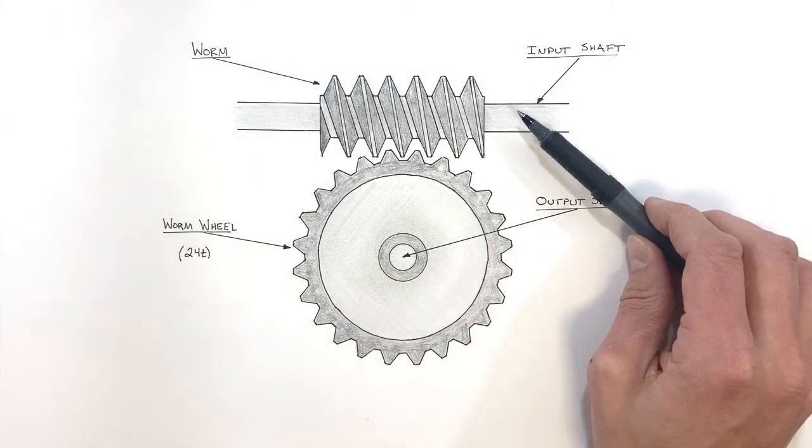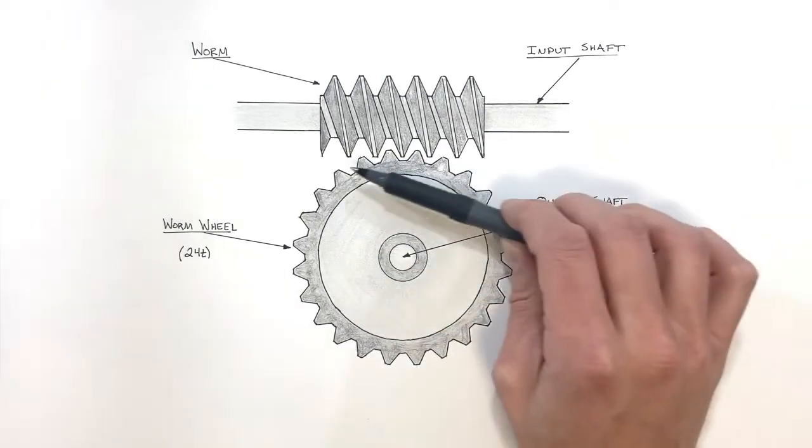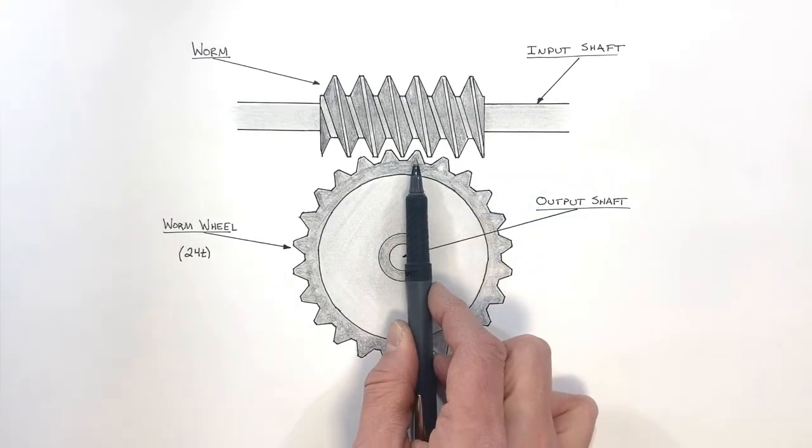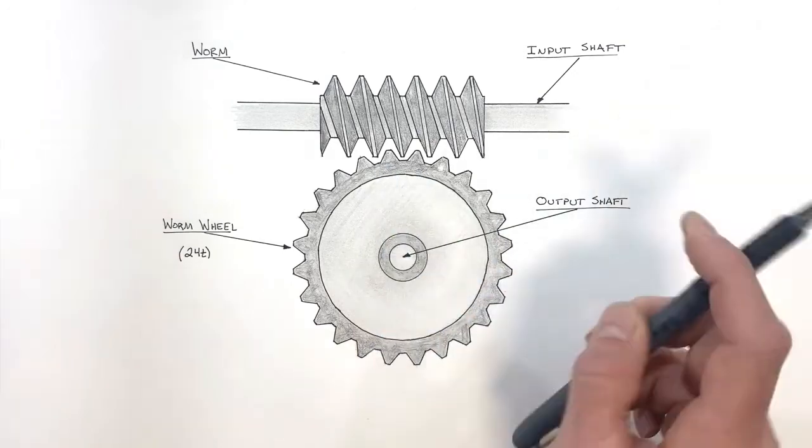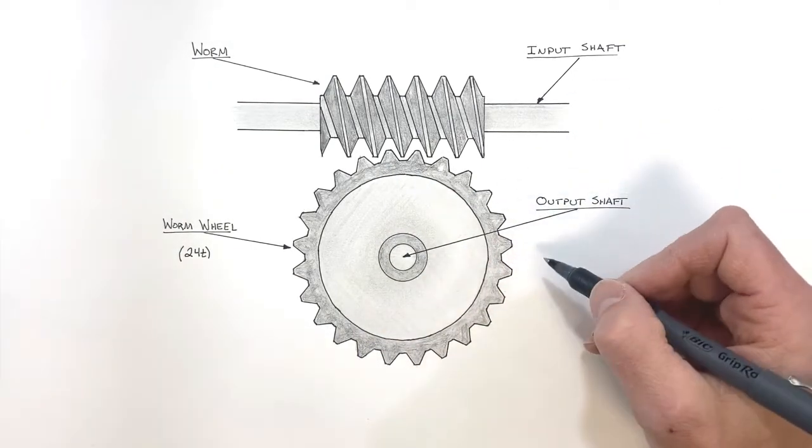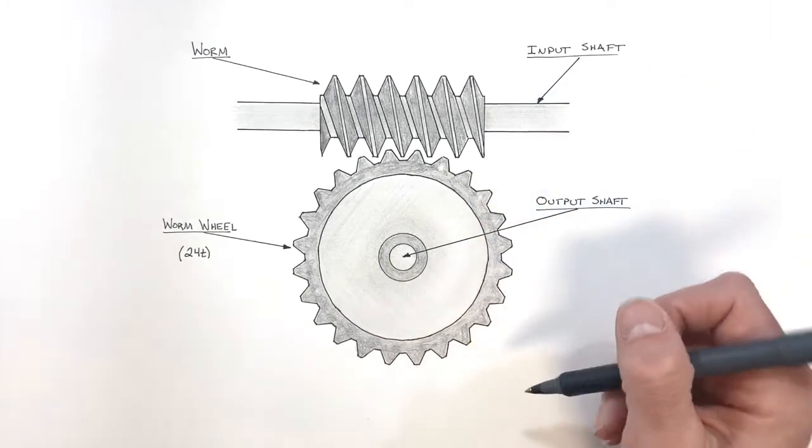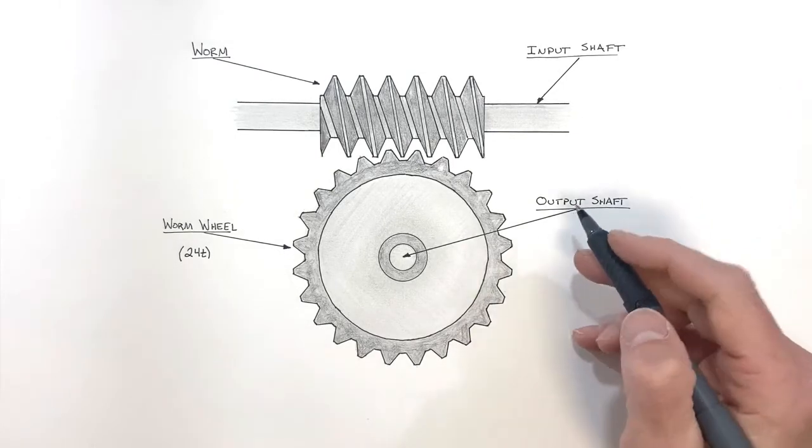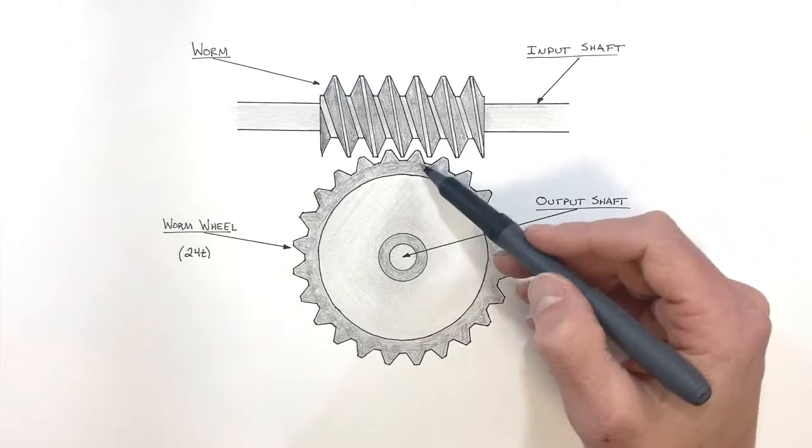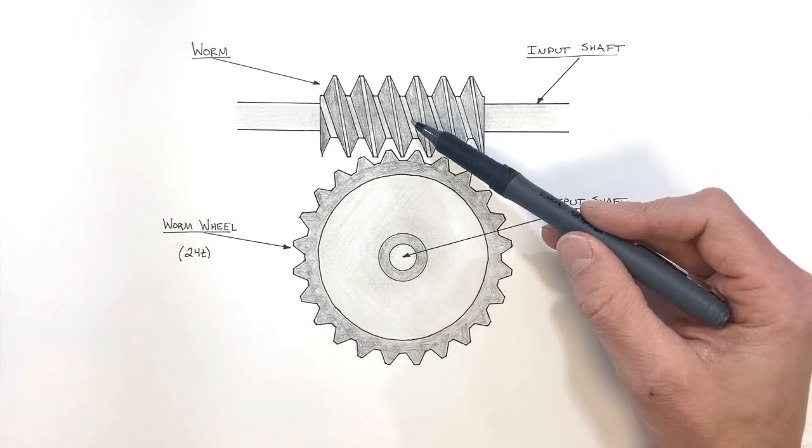In realizing that for every one rotation of the input shaft, this output shaft is going to rotate through only one tooth or the angle associated with a single tooth, we can work out the gear ratio or the mechanical advantage of this worm gear assembly. Typically we look at gear ratio as being the tooth count of the output gear over the tooth count of the input gear.